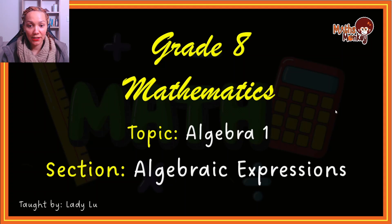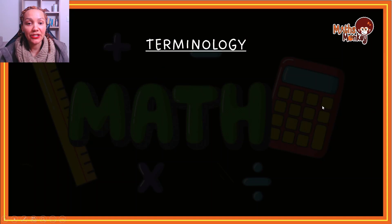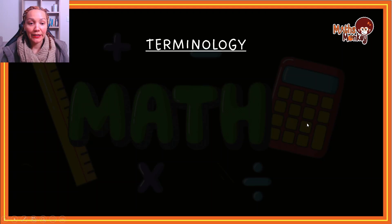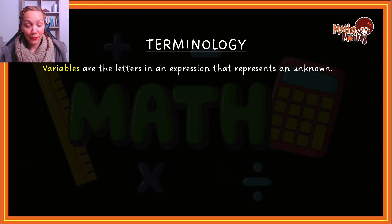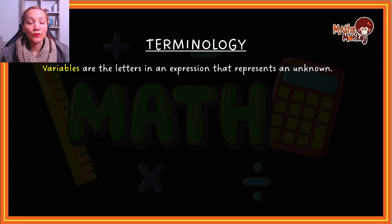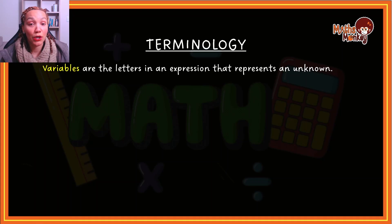Alright grade 8s, so this is our first lesson on algebra and we're going to be looking at algebraic expressions. When I teach I like to start with the basics and make sure that you understand all the terminology. When it comes to algebra, the first thing I want you to take note of is variables. Algebra is essentially expressions that are a combination of numbers and letters. The letters are known as variables, and variables represent values that we do not know — also referred to as unknowns. When you see a letter, it means it represents a number but it's a number we don't know.